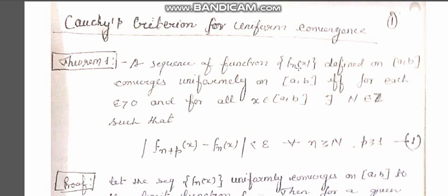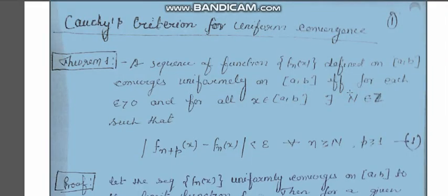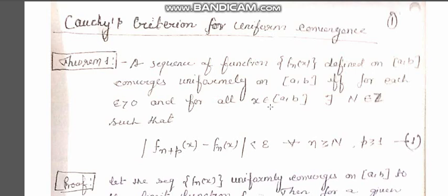A sequence of functions f_n(x) defined on the closed interval [a, b] converges uniformly on [a, b] if and only if for each given epsilon greater than 0 and for all x belonging to [a, b], there exists an integer capital N such that the modulus of f_{n+p}(x) minus f_n(x) is strictly less than epsilon.